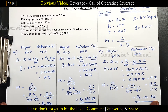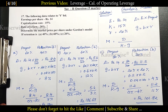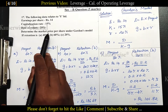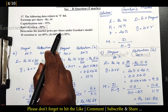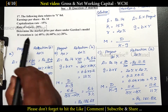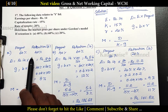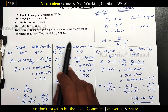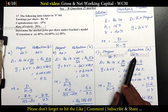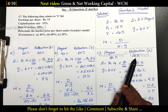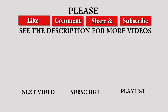This is the way to calculate market price per share under Gordon's model when retention is 40%, 60%, and 20%. Hope you like this video. Please hit the like, comment, subscribe, and share with your friends. Thank you.